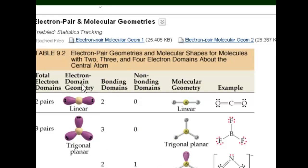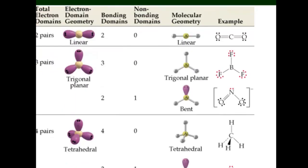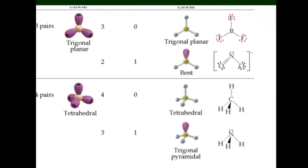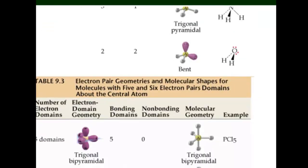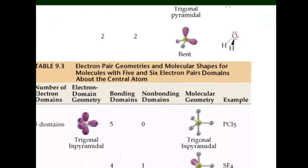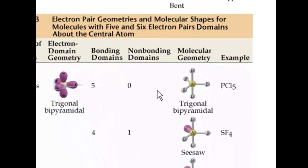Electron domain is electron pair. Molecular geometry is just molecular geometry. So in the case of PF5, there are five bonds around the central atom.